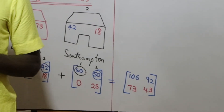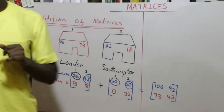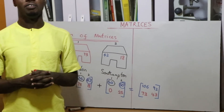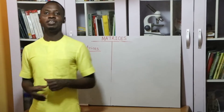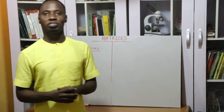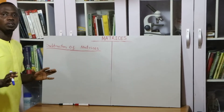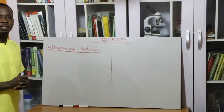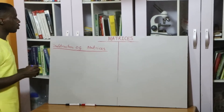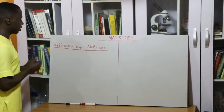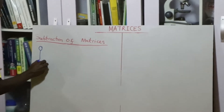So adding matrices is possible and that's just what you do — I'm sure you'll find that very easy. Now let's go to subtraction of matrix. Just like the scenario we painted with addition of matrix, we can also use a similar scenario to explain subtraction of matrix. Now let's assume you are a very beautiful lady and you have two stores.